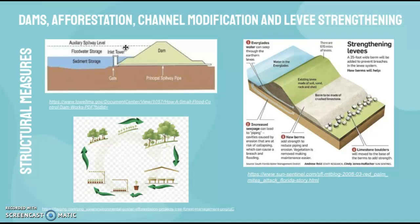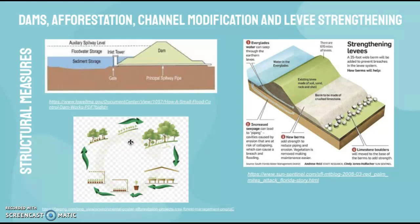Then we have afforestation — basically replanting trees. This idea of replanting trees is a way of increasing interception, which limits the magnitude of a flood and increases the lag time.